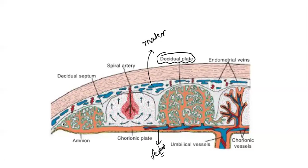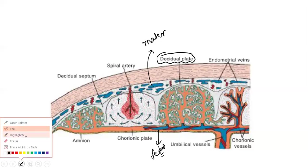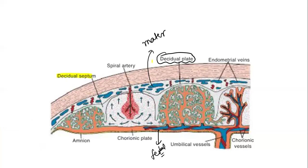From the decidual plate, there is an extension going downward called the decidual septum. This decidual septum extends from the decidual plate downwards but stops just before reaching the chorionic plate — it does not extend all the way to the chorionic plate.